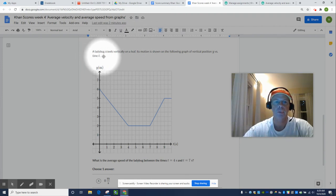So here's the setup. A ladybug crawls vertically on a leaf. Its motion is shown on the following graph of vertical position y versus time t.